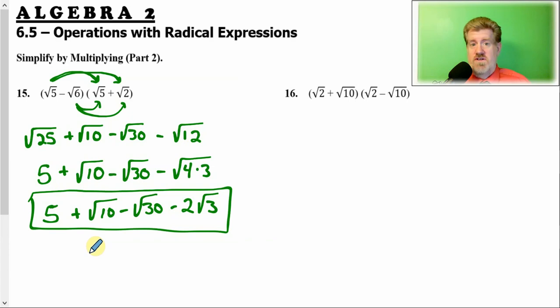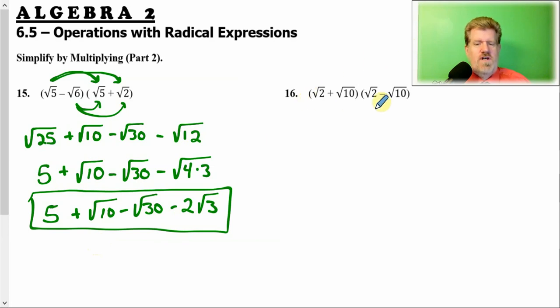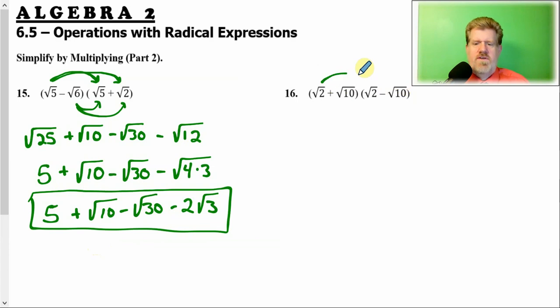So it's pretty straightforward — you just multiply it out and simplify if you can. Now for this next one, you've got to know there's something special about it. There's a square root of 2 plus square root of 10, and a square root of 2 minus a square root of 10. Same process.